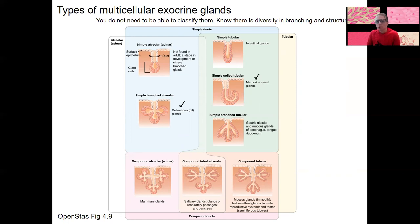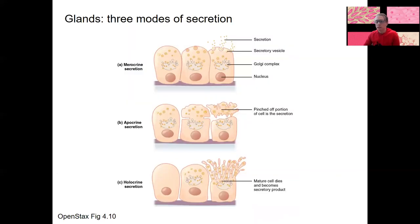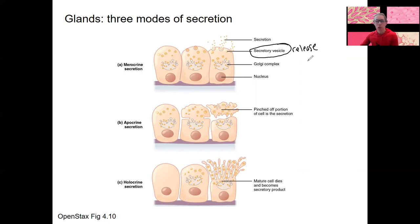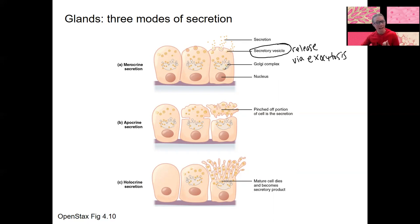I do want you to know about the modes of secretion from these glands. We'll see more examples next week with sweat glands, but here are the three modes. Merocrine is when there are secretory vesicles and release of the substance — whatever is being secreted, whether sweat, oils, mucus, or enzymes — via exocytosis: vesicle fusion with the membrane and release. This releases a lot at once, including things that can't pass through the plasma membrane, making it an active transport process.